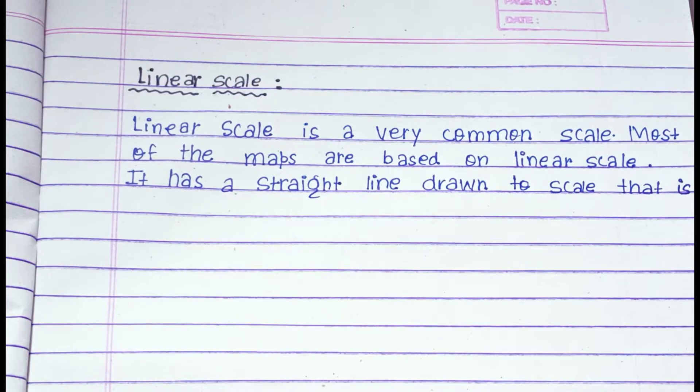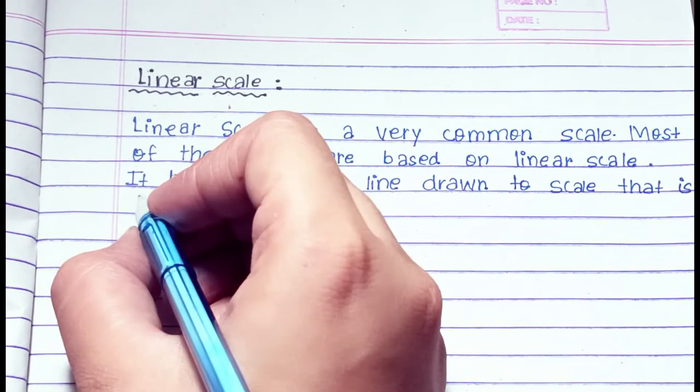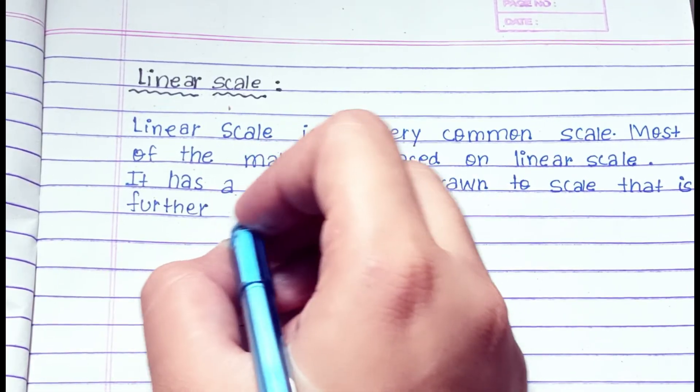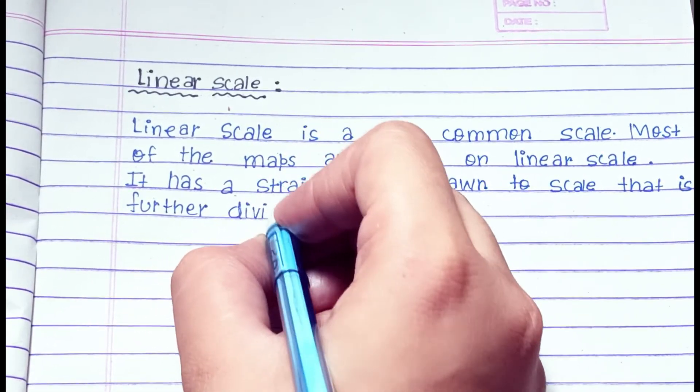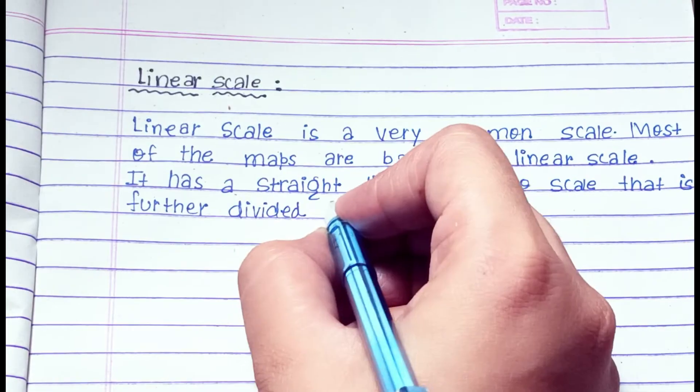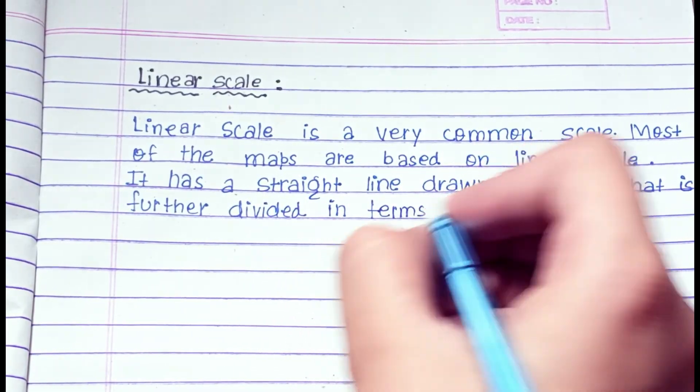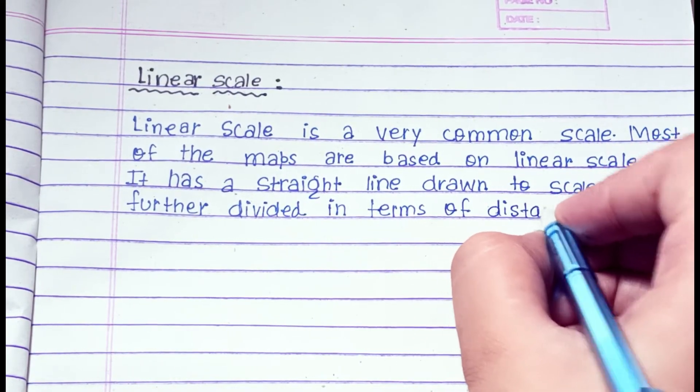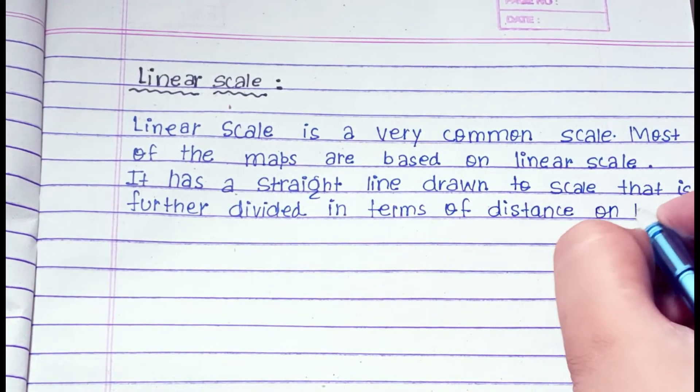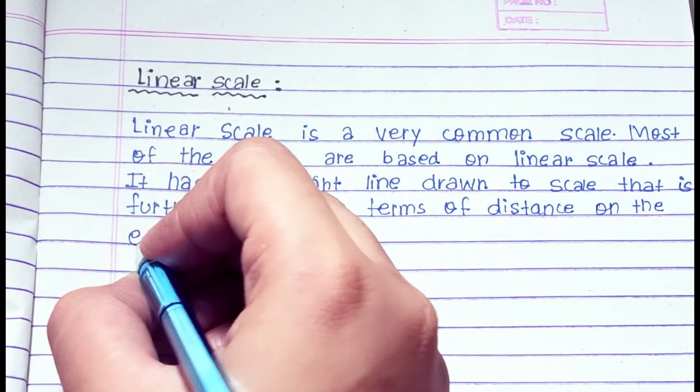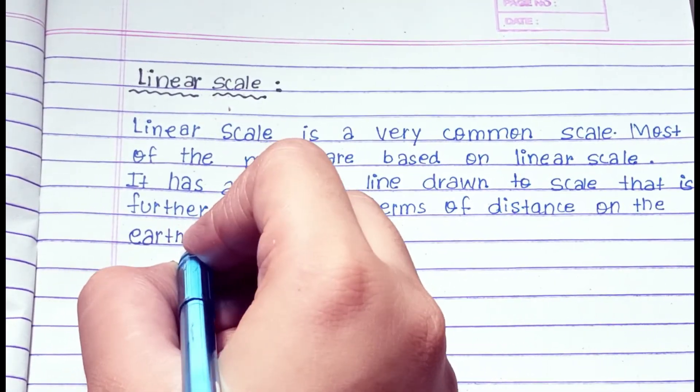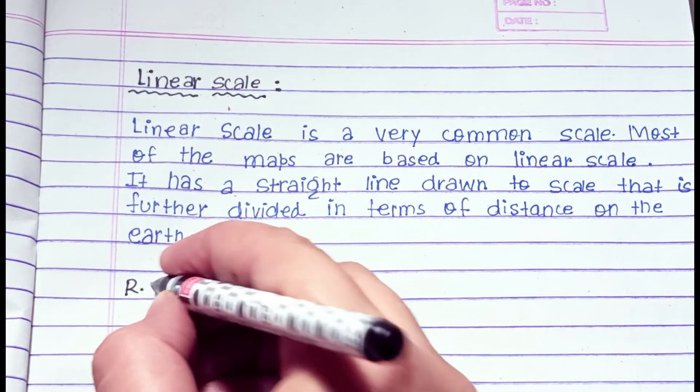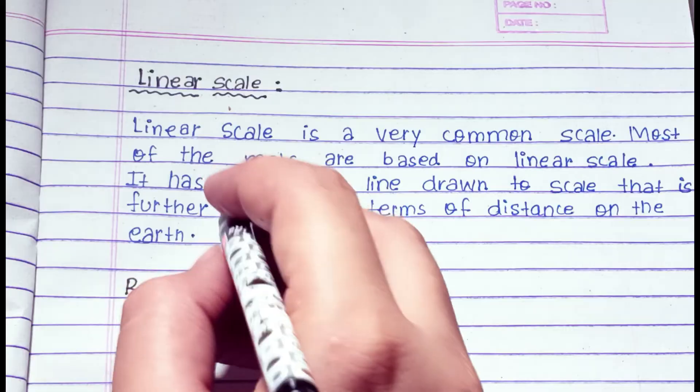Linear scale is a very common scale. Most of these maps are based on linear scale. It has a straight line drawn to scale that is further divided in terms of distance on the scale.